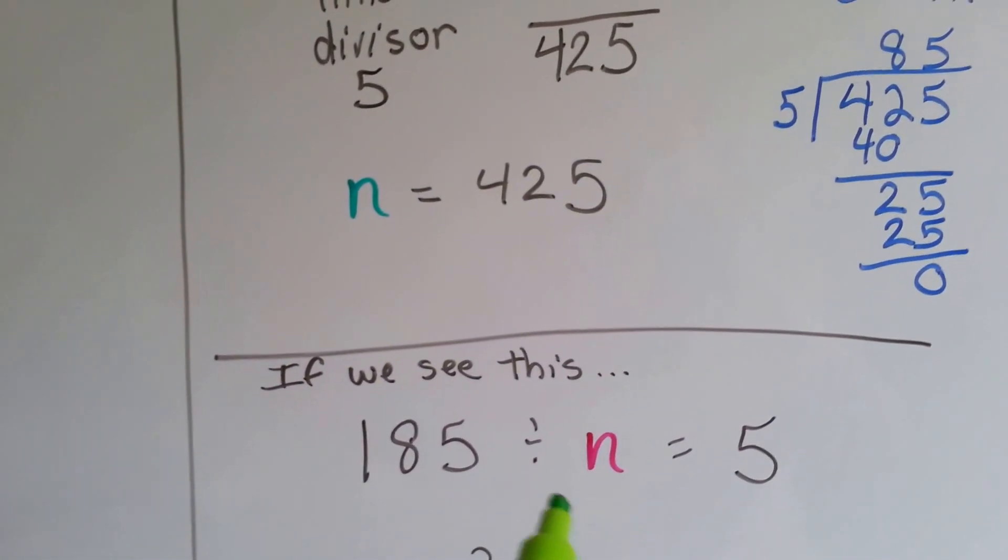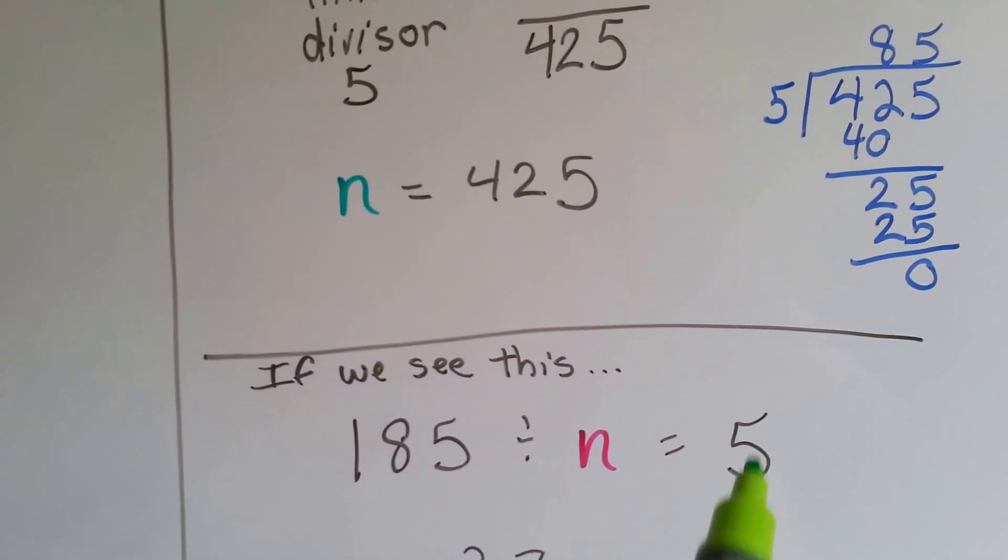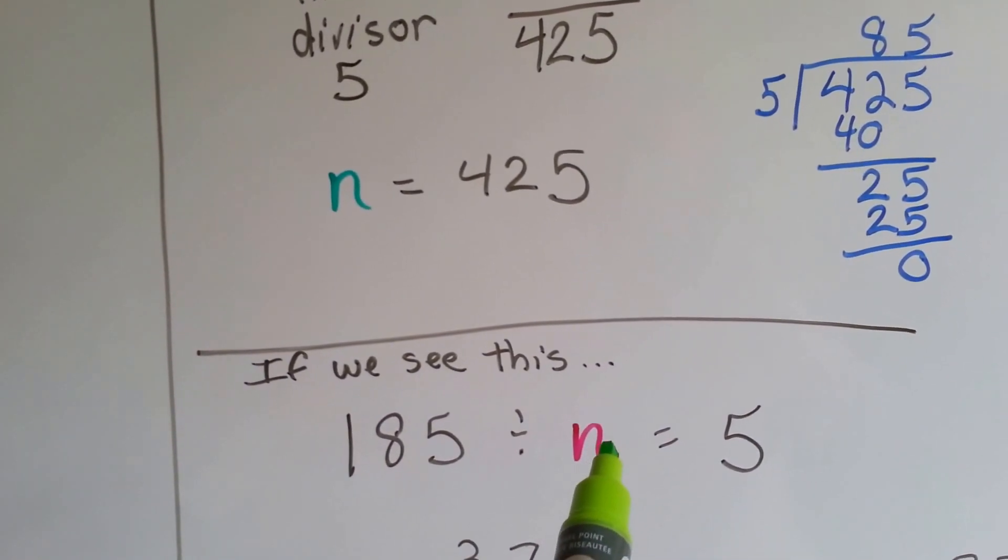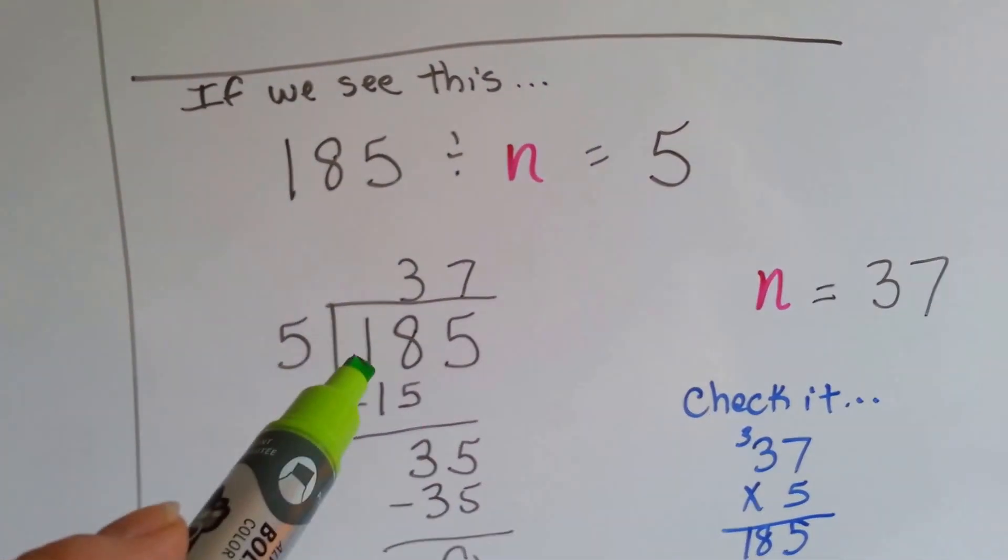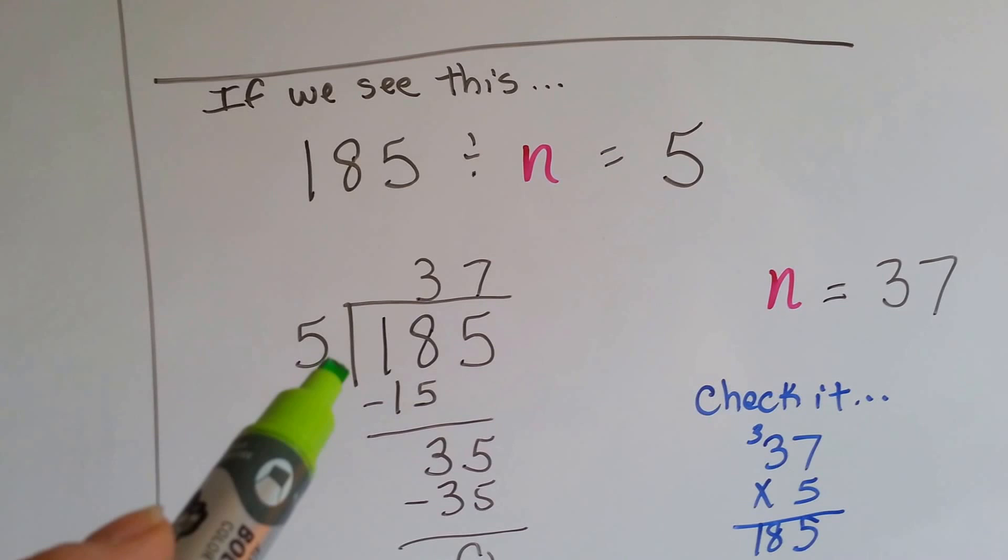The divisor is missing. All you have to do is swap the 5 for the n and divide the 85 by 5. So, 185 divided by 5.